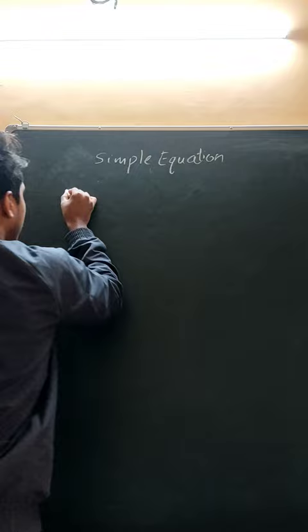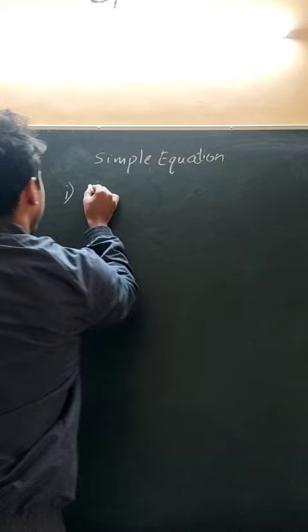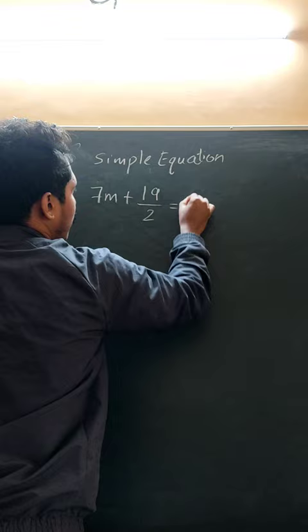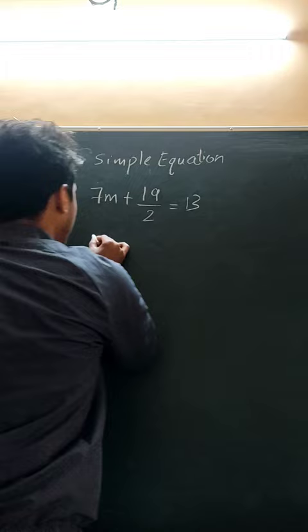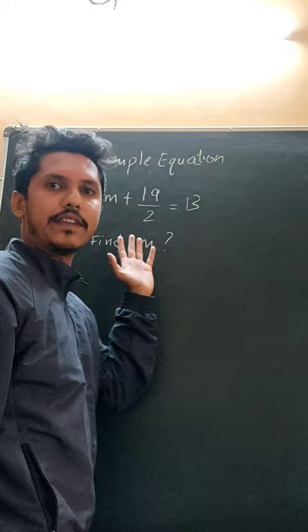The first problem is: 7m plus 19 divided by 2 is equal to 13. We need to find the value of m here.